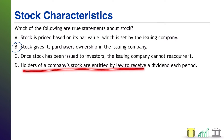How about D? Holders of a company's stock are entitled by law to receive a dividend each period. That is not true. You will have cumulative preferred stock, which does entitle those stockholders to get a dividend each period. However, it is not guaranteed that the company will actually pay in any given period — the company may let a couple of years rack up and then do one big payout to make up for all the misses. But that is only cumulative preferred stock. Non-cumulative preferred stock and common stock have absolutely no entitlement to a periodic dividend. So the only answer that was right was B.